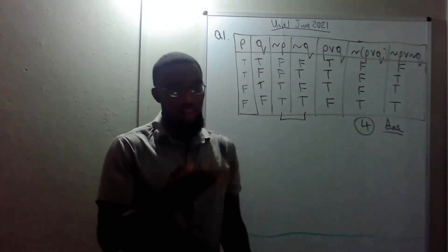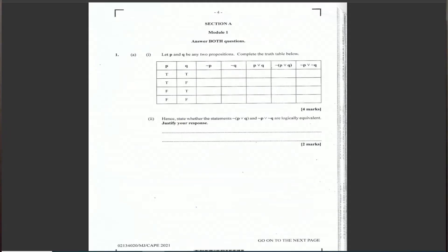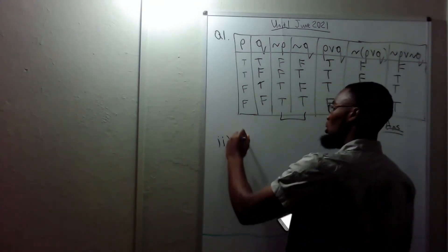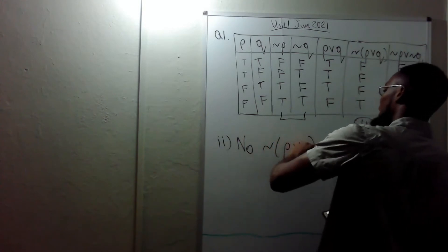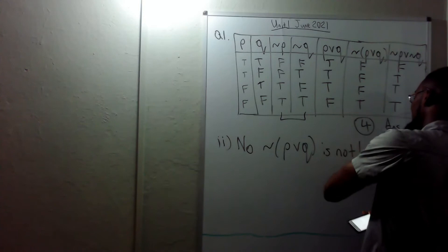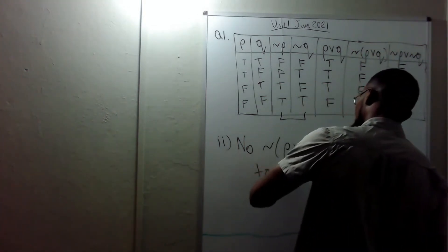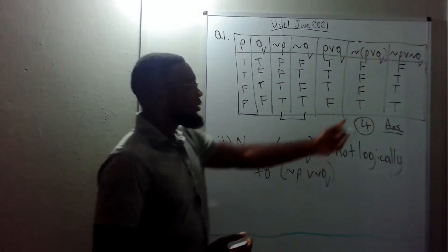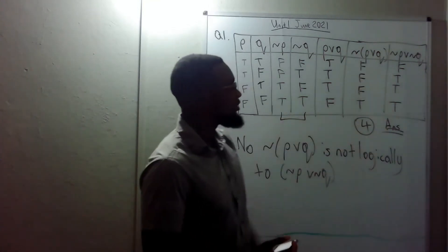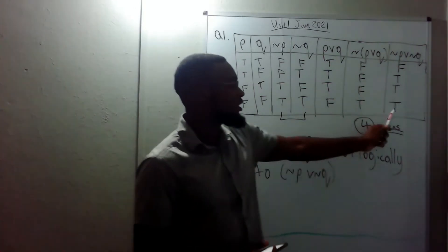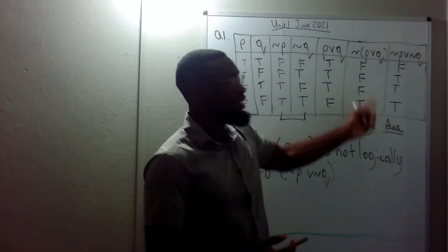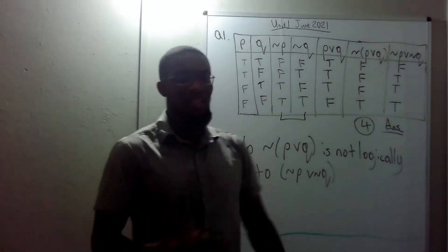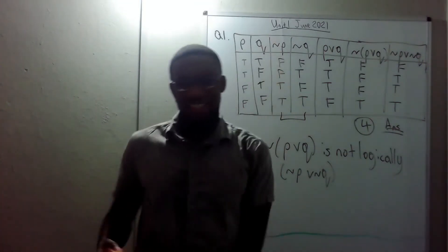The next part says: hence justify if the two statements are logically equivalent. The negation of P∨Q is NOT logically equivalent to ¬P∨¬Q. The reason they're not logically equivalent is because they don't have the same truth values — for example, ¬(P∨Q) gives false where ¬P∨¬Q gives true. Since they don't yield the same truth results, they cannot be logically equivalent.